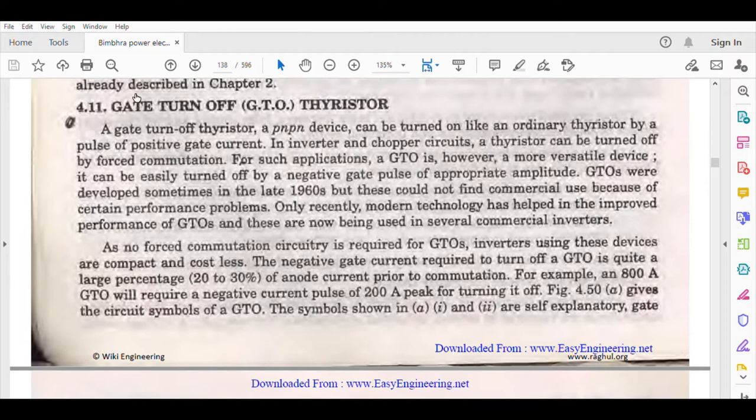A Gate Turn Off Thyristor, a PNPN device, can be turned on like an ordinary thyristor by a pulse of positive gate current. The gate turn off thyristor is normally the same PNPN device as ordinary thyristor, using positive gate current or positive pulse.